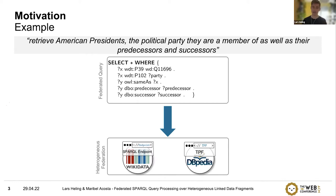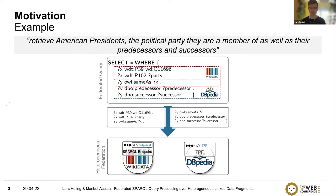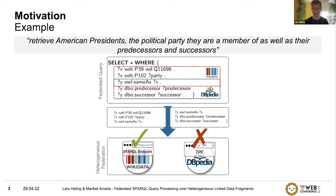Traditionally, federated query processing uses query decomposition to determine which parts of the query should be evaluated at which sources. But the problem is that traditional approaches assume all interfaces to be very expressive, supporting the full fragment of SPARQL. Some interfaces in heterogeneous federations may not evaluate all sub-expressions. In this example, the triple pattern fragment server can only evaluate triple patterns, not larger sub-expressions like basic graph patterns. Therefore, we need to extend existing approaches to handle heterogeneous federations efficiently.